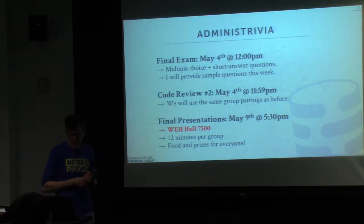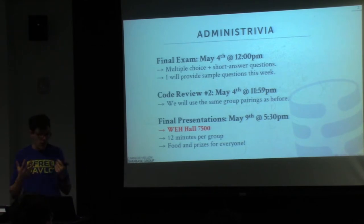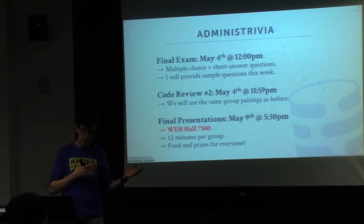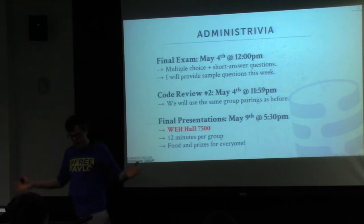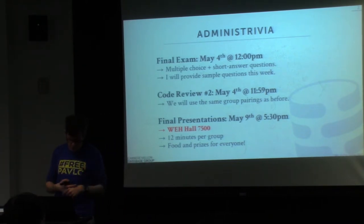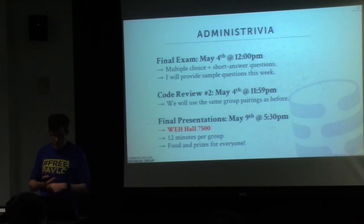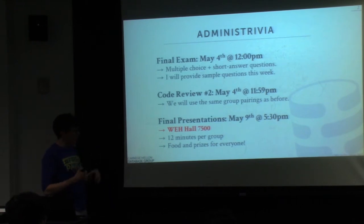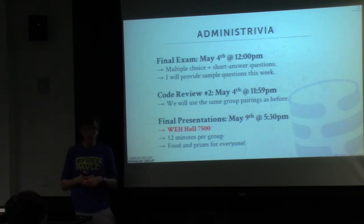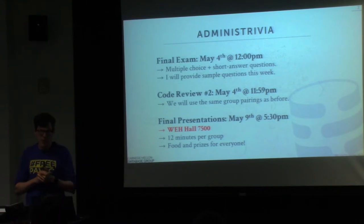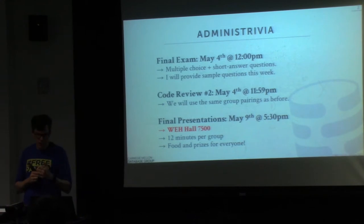The other administrative items: the second round of the code review will be due next Thursday as well, at midnight. I decided to keep the same groups from the first code review, so you're not reading a whole bunch of new code. The final presentations will be in Wien Hall on the 9th at 5:30 PM, the same setup as the proposals and project updates. You'll present the final outcome of your project on stage, and there'll be pizza, t-shirts, and prizes for everyone.